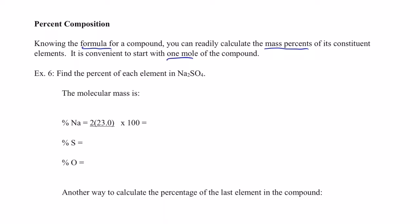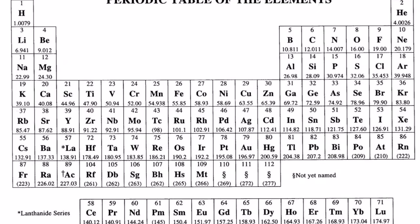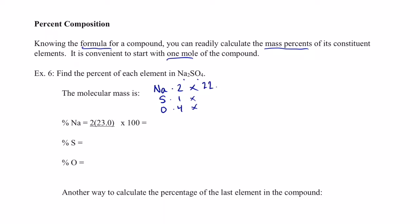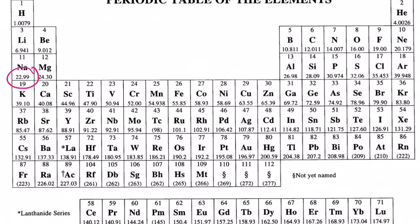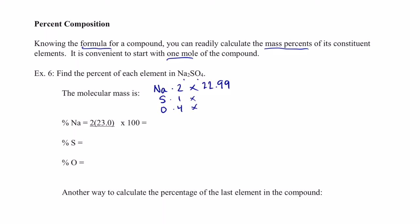It's convenient to start with one mole of the compound. Let's say I wanted to find the mass percent of each element in the compound sodium sulfate. First, we have to find the molecular weight. We have sodium — two of those — we have a sulfur, and we have four oxygens. Let's look at the mass of each of these.